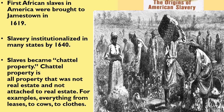Slaves were chattel property. Chattel property is all property that was not real estate and not attached to real estate — real estate is more like land. For example, everything from a lease to a cow to clothes is chattel. Slaves were put in that category. They were considered property — like your purse, your shoes, your book bag, your pencil. Those are your property. And that's what slaves were put on the same level as — property.